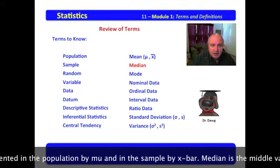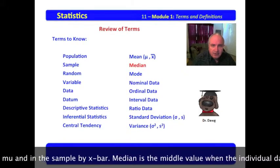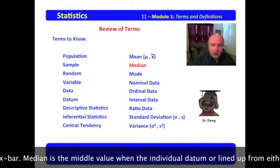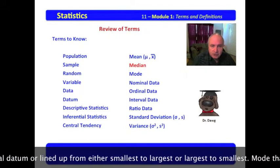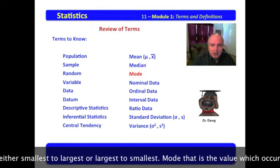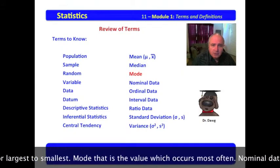Median is the middle value when the individual datum are lined up from either smallest to largest or largest to smallest. Mode is the value which occurs most often.